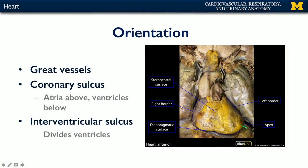The heart is oriented within the middle mediastinum with its apex pointing inferolaterally to the left, with its great vessels — or at least the majority of its great vessels — entering and exiting the heart from the superior. The great vessels include the aorta, pulmonary trunk, and the superior and inferior vena cava.